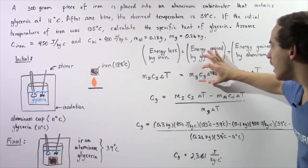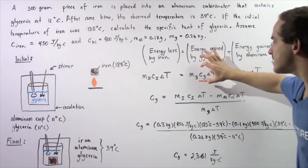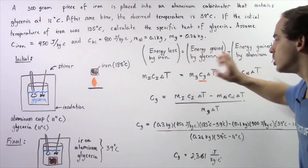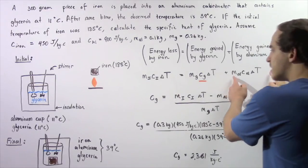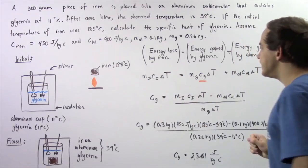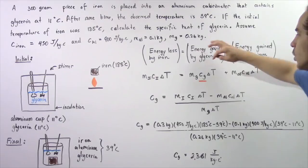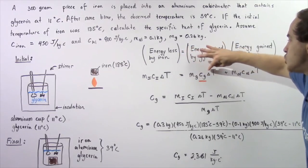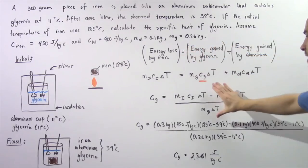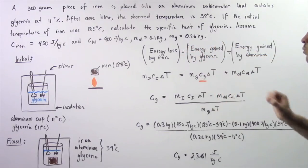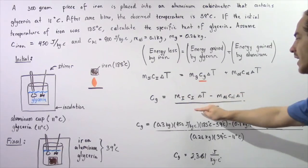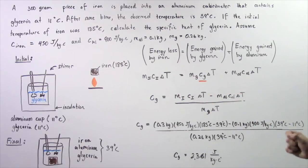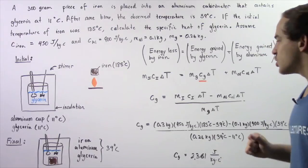We solve for the specific heat of glycerin, because that is what we're looking for. We get the following result: we simply bring the aluminum energy term to the left side and divide both sides by mass of glycerin times delta T. That's exactly what we're left with. We know what all these quantities are, so we plug them in.